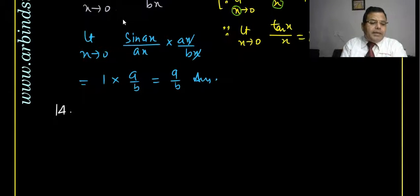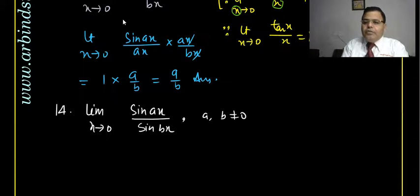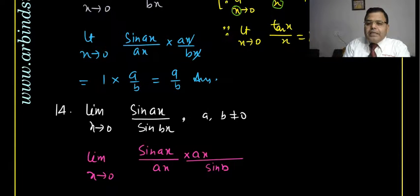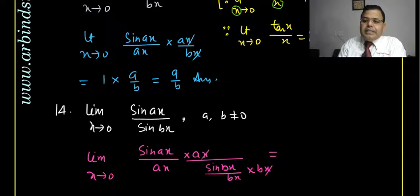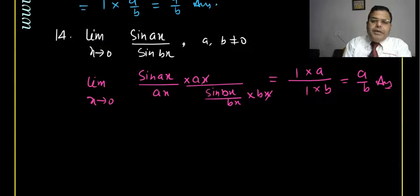Question 14: limit as x tends to 0 of sin(ax)/sin(bx), where a ≠ 0 and b ≠ 0. We write this as [sin(ax)/(ax)] × ax divided by [sin(bx)/(bx)] × bx. The x's cancel, sin(ax)/(ax) → 1 and sin(bx)/(bx) → 1, leaving a/b as the answer.